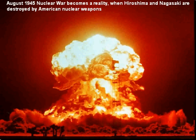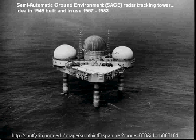The way nuclear weapons were delivered to their target was by bombers. So, as early as 1948, the U.S. military conceived of the idea of building a radar network — a series of radar towers, like the one in the image you're looking at right now — in the middle of the ocean or on land, that could detect incoming bombers.